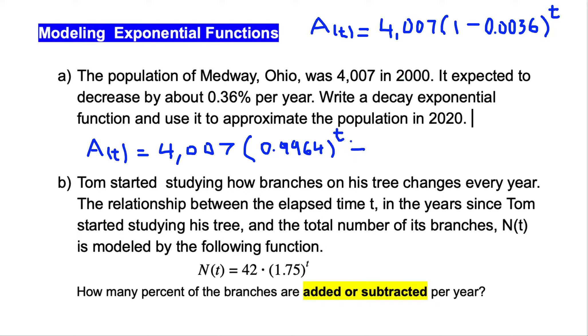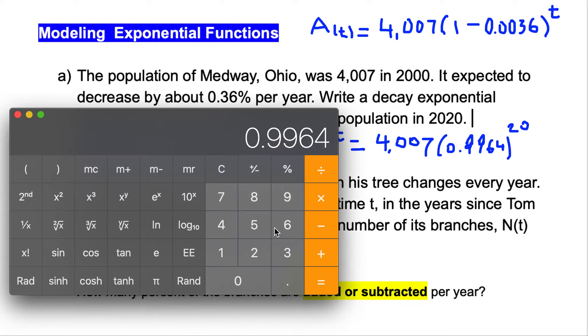We can calculate this way. We put the initial population value which was 4,007, times 0.9964 in exponent of 20. Let me write those numbers better so we know what we wrote, in exponent 20.